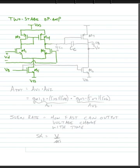Alright, we're going to take the output of that first stage, and we're going to feed it into a second stage that's going to consist of a common source amplifier, M7.